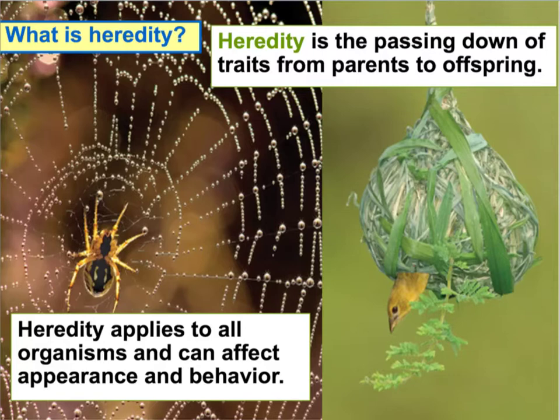An inherited trait is a trait that an offspring receives from its parent. With humans, some inherited traits include hair, dimples, eye color, maybe facial features, maybe the way you laugh — little quirks that your parents have. You might have received those as inherited traits from them.